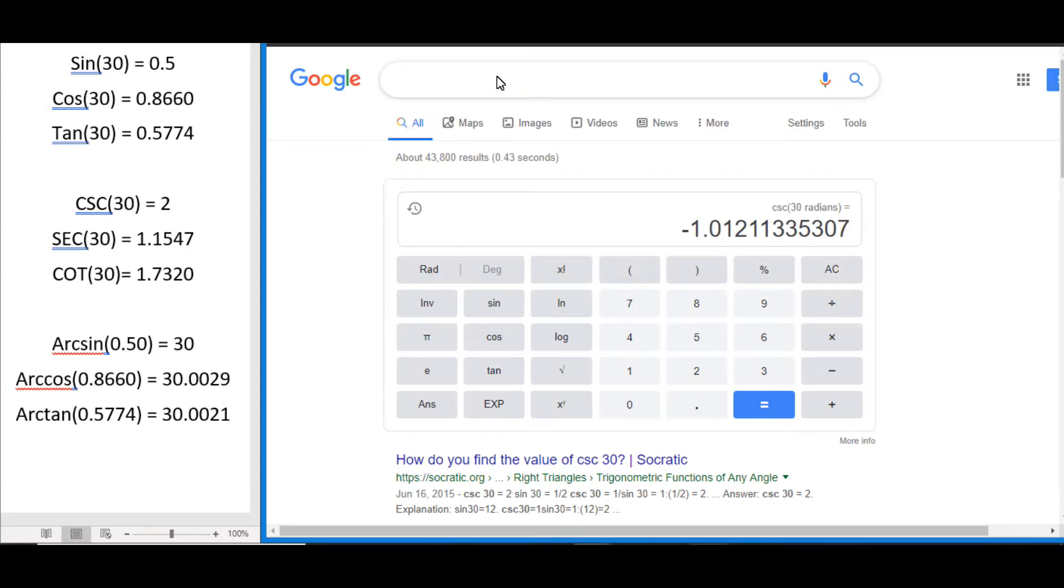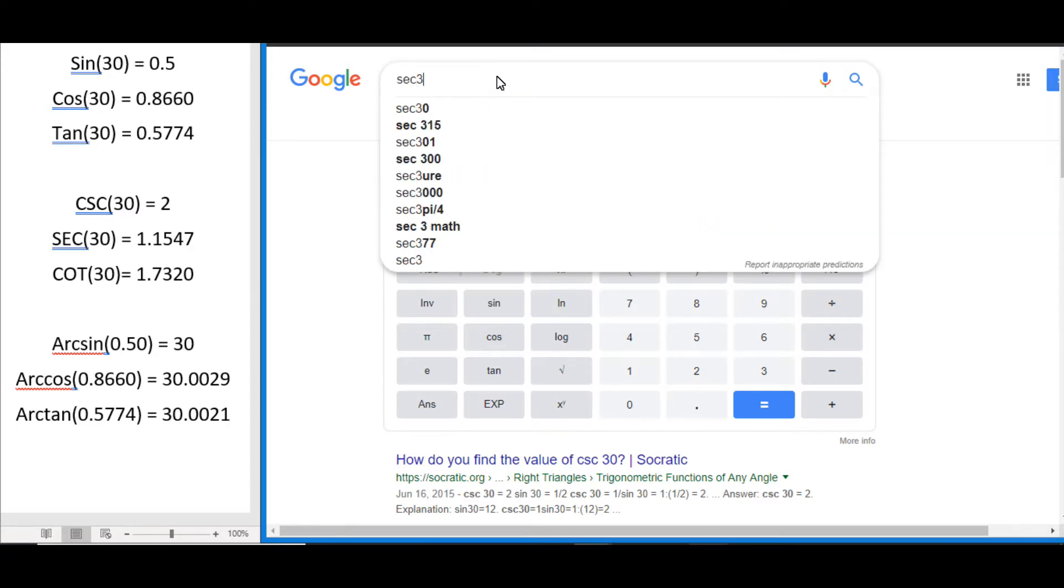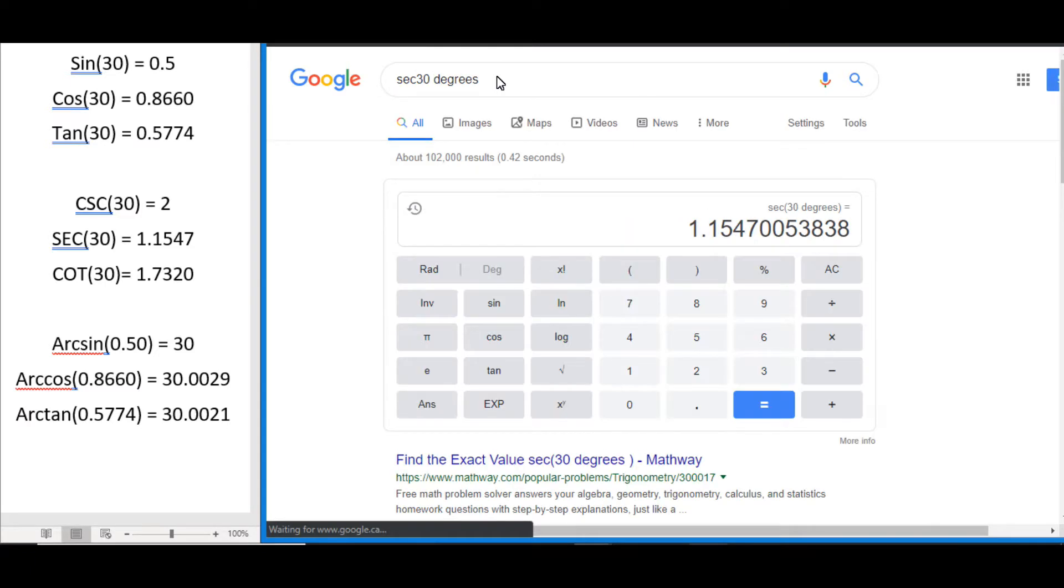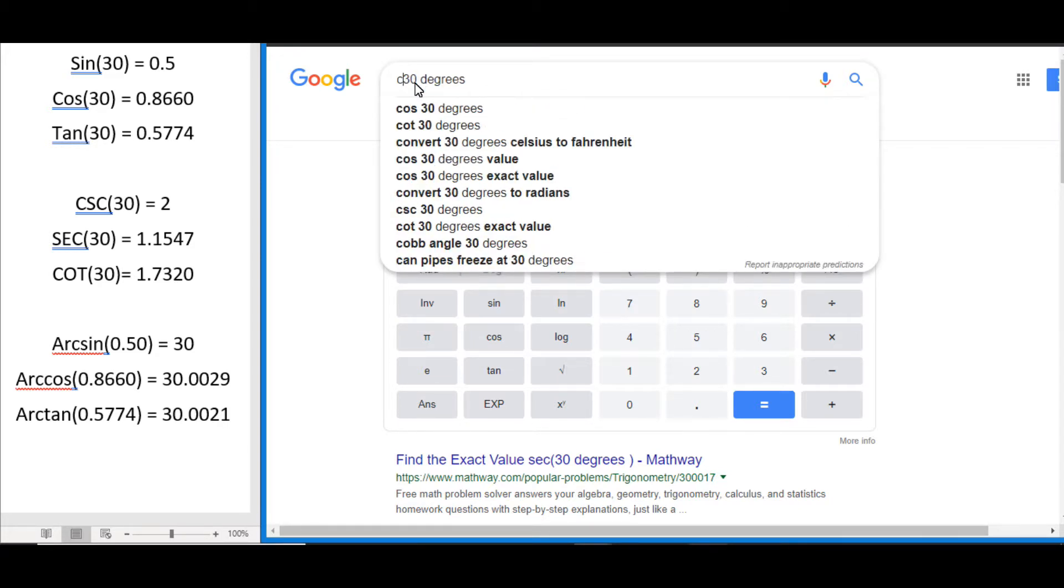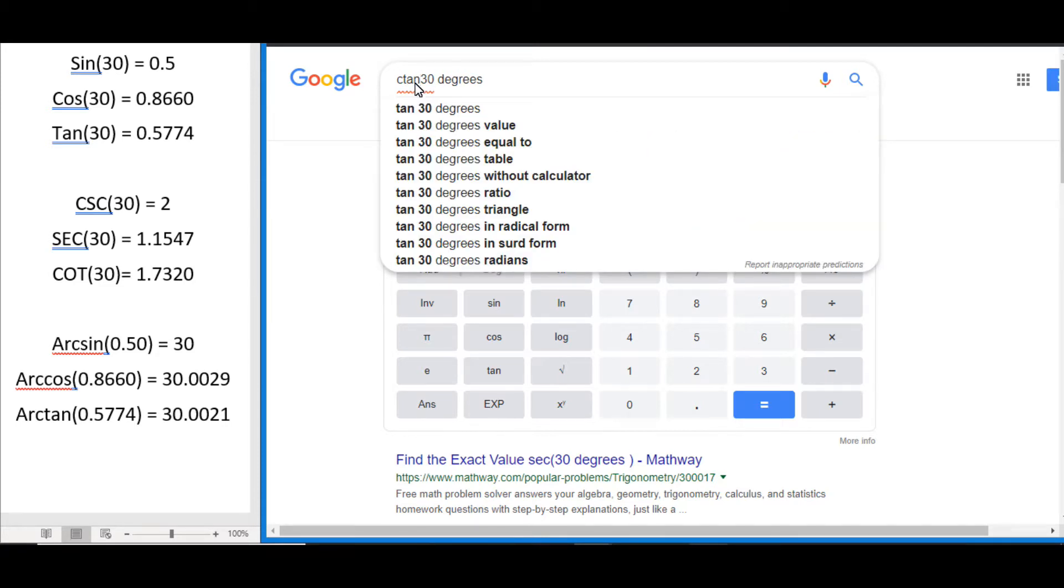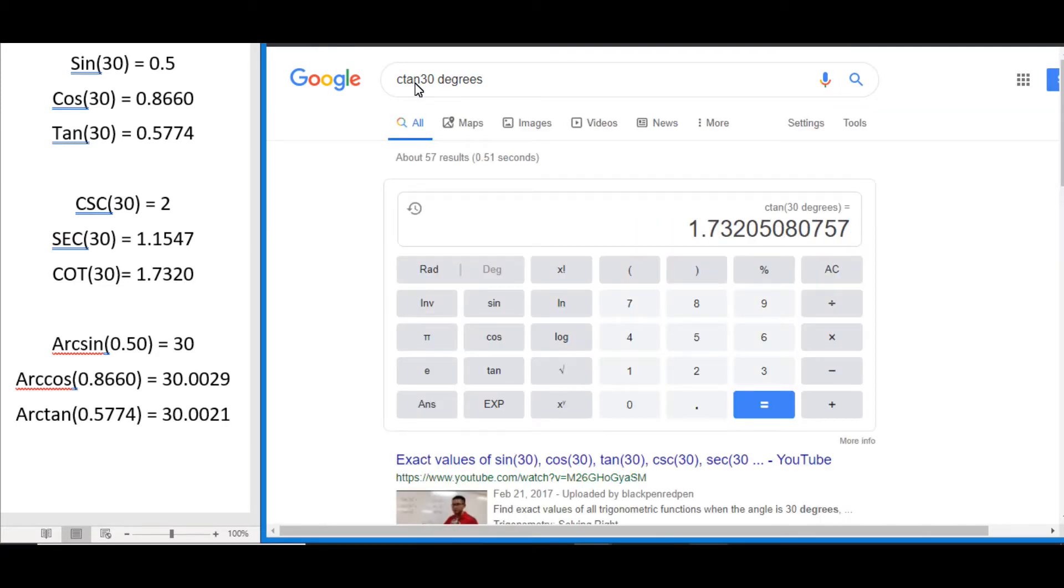You can do the same with secant, so sec 30 space degrees, there we go we got the same thing again. And for cotangent you do that with ctan 30 degrees, and again you can see we get 1.7320.